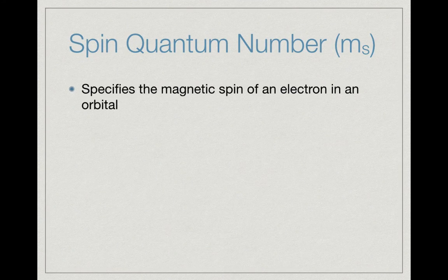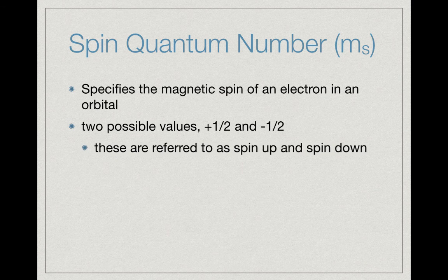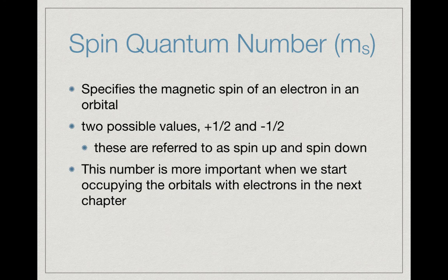The last quantum number, the spin quantum number m sub s, specifies the magnetic spin of an electron in an orbital. It only has two possible values: plus one half and minus one half, referred to as spin up and spin down respectively. This concept becomes more important once we start occupying orbitals with electrons, which we'll do in the next chapter.